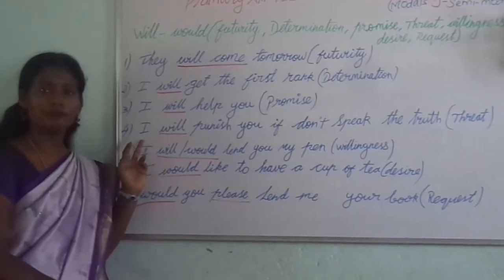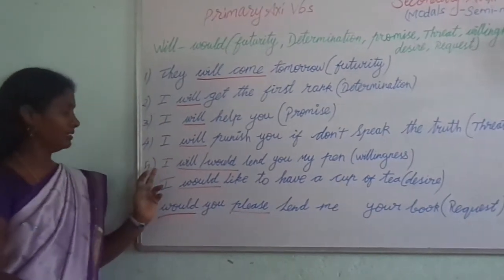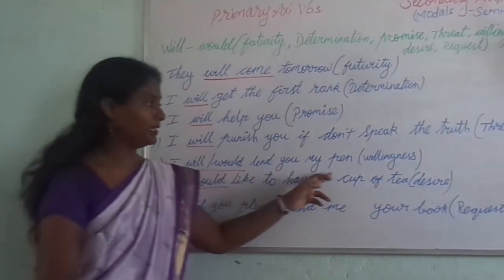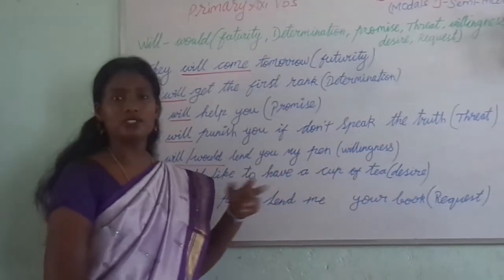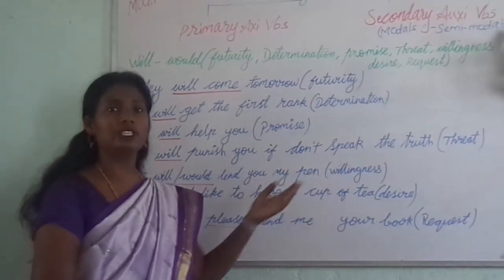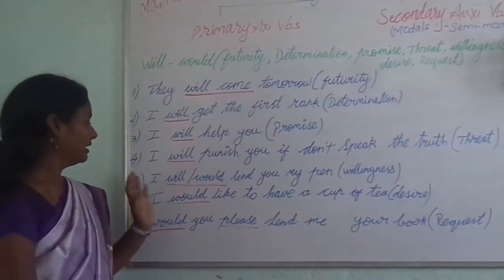So if you want to threaten someone, we shall use will. 'I will or would lend you my pen' — 'I would like to lend you my pen.' That is willingness. With willingness, he is lending his pen.